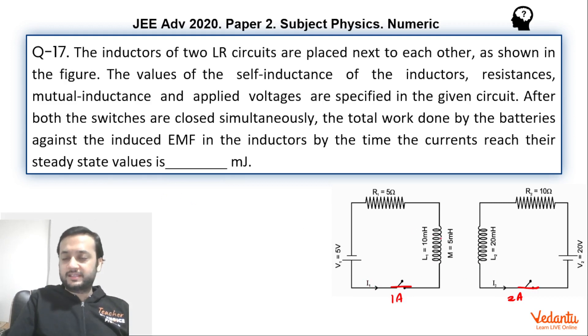Now if I say that in dt time how much work is being done, dW1 is the work done against the EMF of this inductor in time dt. So I can write dW1 as E1·I1·dt. Power is VI, power is rate of work being done. So dW1 by dt will be EMF of this into I1.